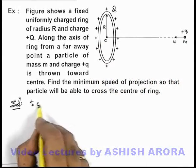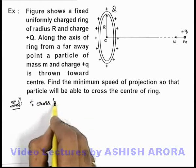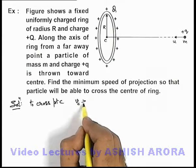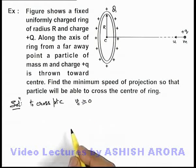So we can say to cross point C, velocity of particle at C will be more than or approximately equal to zero.